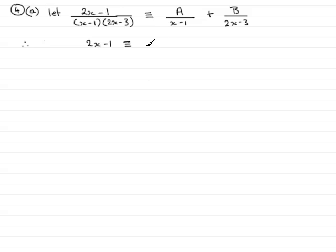That would mean the x minus 1 would cancel out with that x minus 1 and just leave me with A times 2x minus 3. Doing the same on this term, that is multiplying this term by the denominator, means that the 2x minus 3 would get cancelled out and just leave me with B times x minus 1.